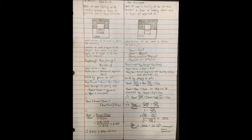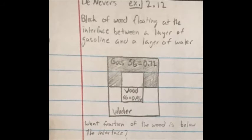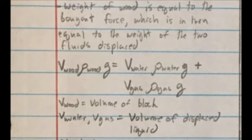By following a procedure outlined in Denevers' example 2.12, the percentage of the block below the two-liquid interface can be determined. The book example is shown in the left half of the picture. This example deals with a wooden block that is floating between a gas-water interface.